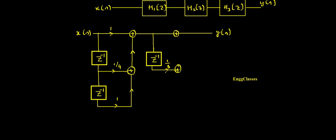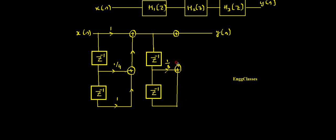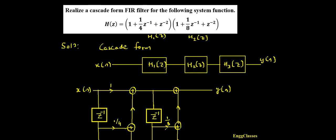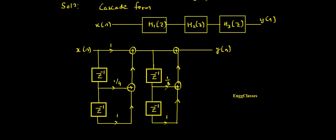Then I have z to the power minus 2 — I add one more adder and join these things. This signal gets added with the previous signal. The multiplying factor for this term is also z to the power minus 2. So now this is the cascade form realization of the given FIR filter. Towards the end we get the output y of n. Thank you so much for watching.